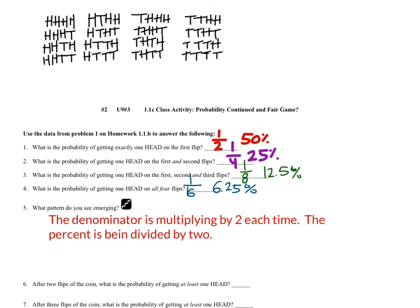After two flips of the coin, what is the probability of getting at least one head? We can think of it as: what's the probability of getting all tails, and then take the opposite. Looking at the four possible outcomes for two flips, only one has all tails, so the other three out of four have at least one head — that's 75%.